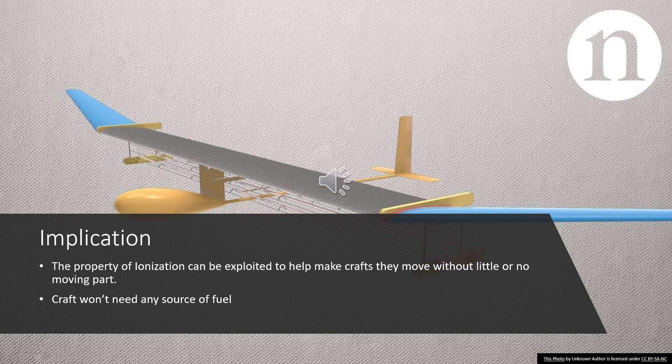The implication of ionization. The ionization can be exploited to help make craft with little to no moving parts. They do not require fuel. They don't have to require any moving parts just to work. All it needs is just electricity and power just to make it work.